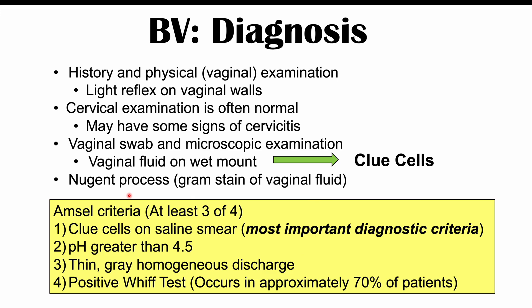Another diagnostic procedure is the Nugent process, which is a Gram stain of vaginal fluid. The formal diagnostic criteria is called the Amsel criteria, requiring at least three of four criteria: clue cells on a saline smear (the most important criterion), vaginal pH greater than 4.5, thin gray homogeneous discharge, and a positive whiff test — where a drop of KOH on the vaginal discharge produces a strong fishy smell. The whiff test occurs in approximately 70% of patients. A modified Amsel criteria requires only two of the four for diagnosis.